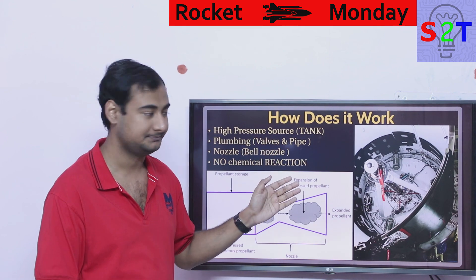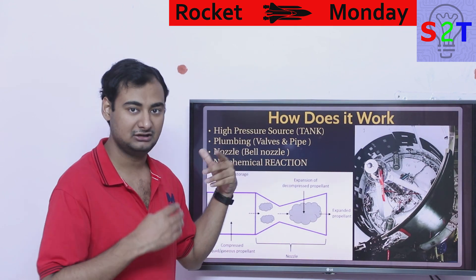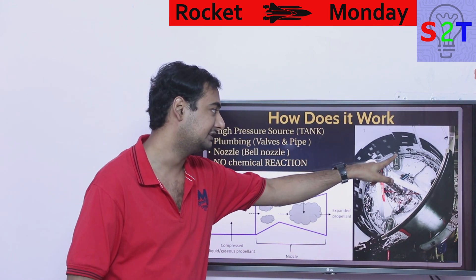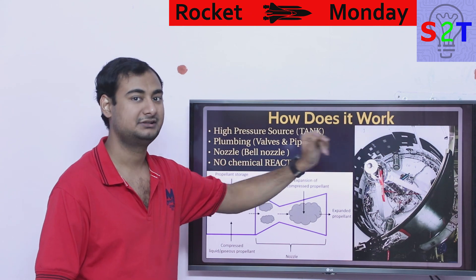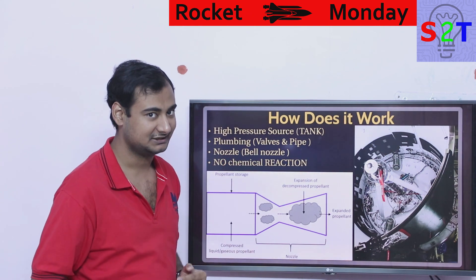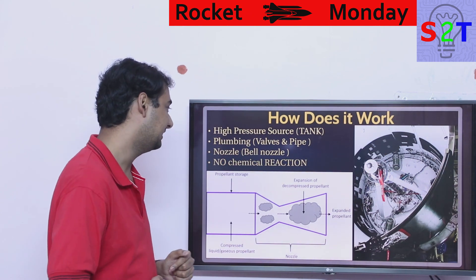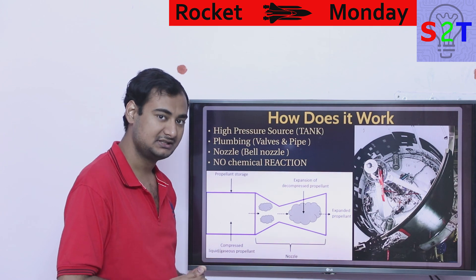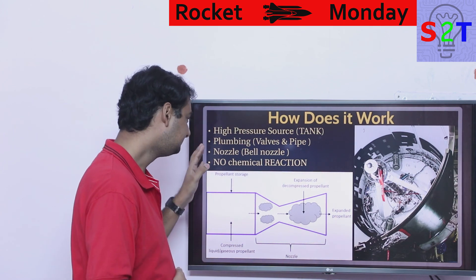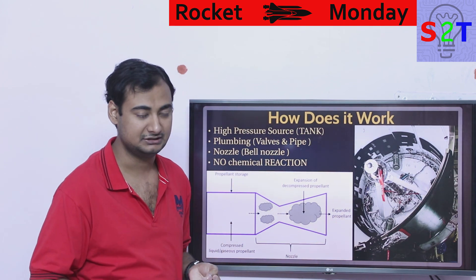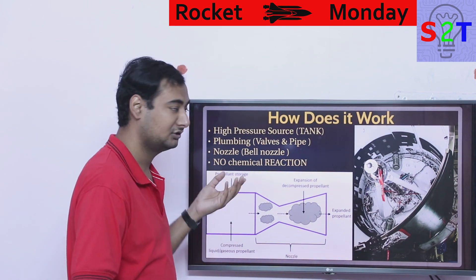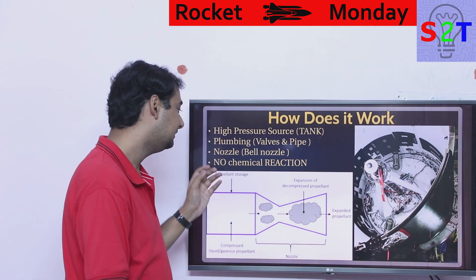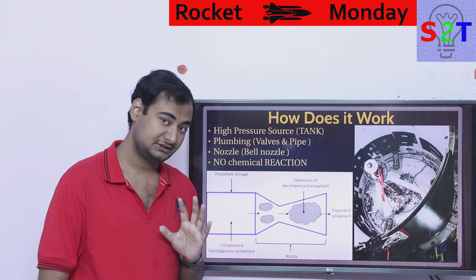Part number two is plumbing — valves and piping — because it's unlikely you'll have the luxury of placing the tank directly in front of the nozzle. Then you have the nozzle, same as any rocket engine, fine-tuned for the altitude where you want it to work.